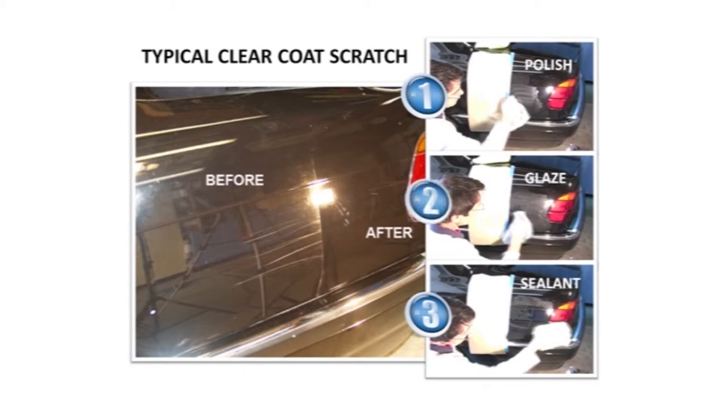So step two is a glaze, and the glaze does not remove scratches. It just brings out the depth and clarity of the paint, and it removes any super micro-marring that's left from the polish or the microfiber towel itself.